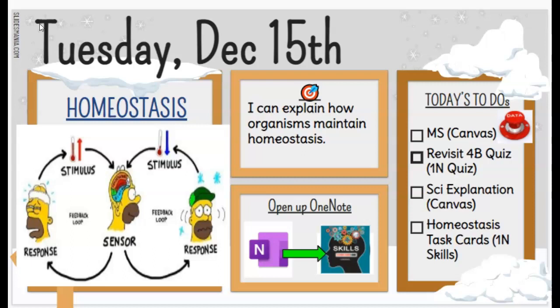Looking at the key graphic today, you see Homer, and there are two stimuli. Homeostasis is balance, or making your body a homey place to stay — just the right temperature, just the right amount of sugar, just the right amount of water.